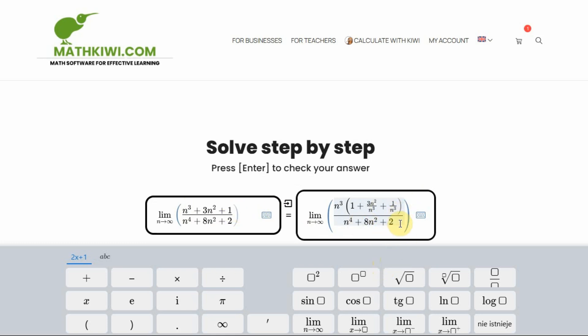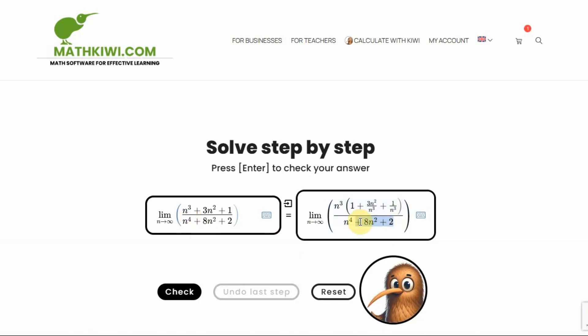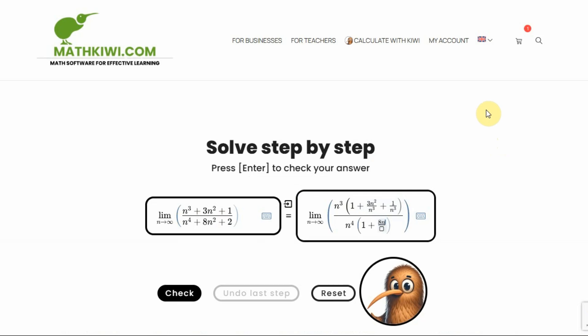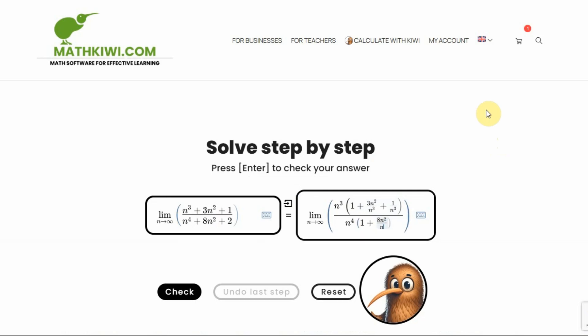Similarly, I do it below in the denominator. Similarly, but not exactly the same, because the highest power below in the denominator is n to the fourth, so I factor out n to the fourth. N to the fourth divided by n to the fourth is 1 plus the second term 8 n squared. 8 n squared over n to the fourth. I divide by n to the fourth, plus 2, I divide by n to the fourth.